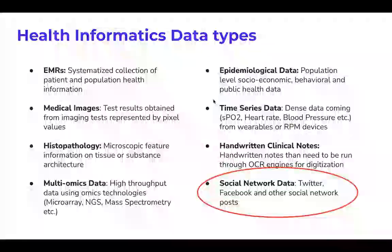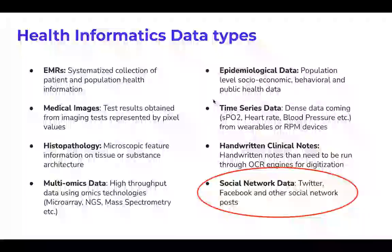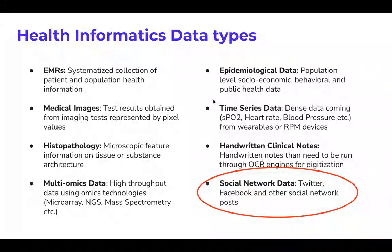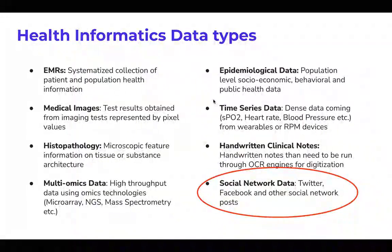Lastly, social network data. You can do sentiment analysis from Twitter posts to determine that a person has a particular sentiment as detected across their multiple posts over the last six months. That tells us that this person is at high risk for depression and maybe suicide. Suicide detection and other mental health problems can be identified from this sort of data.